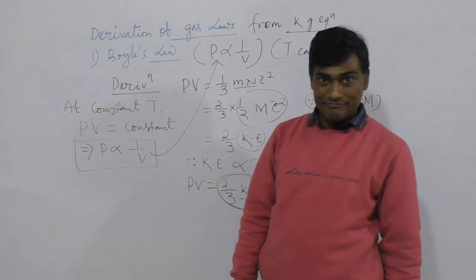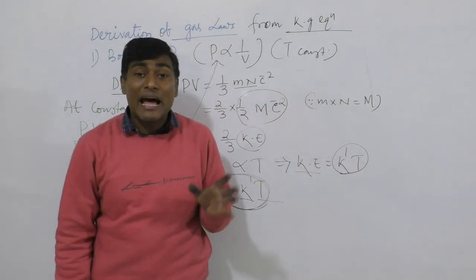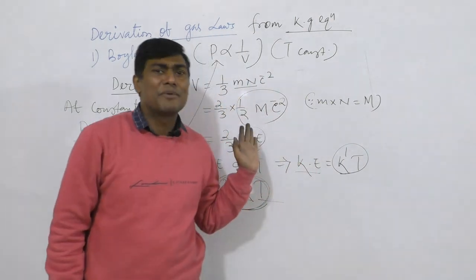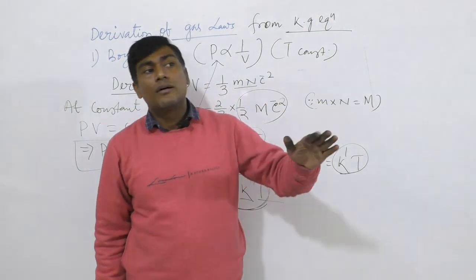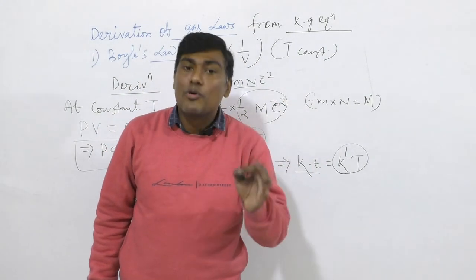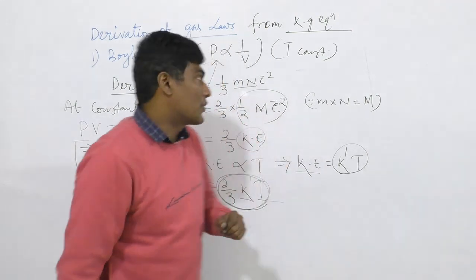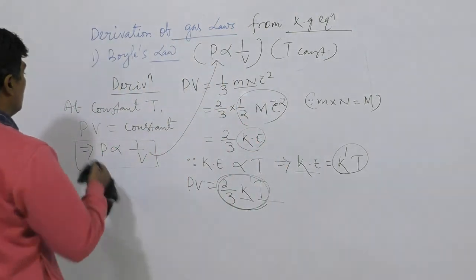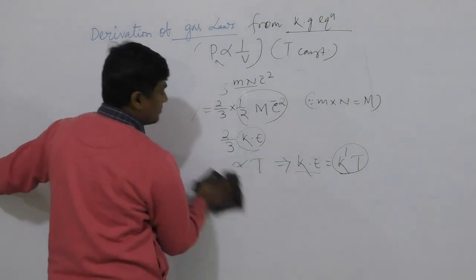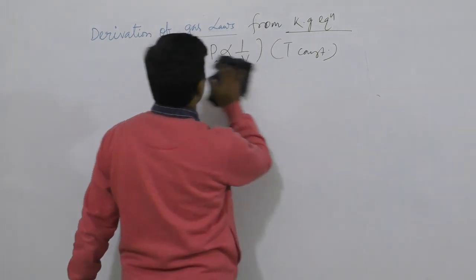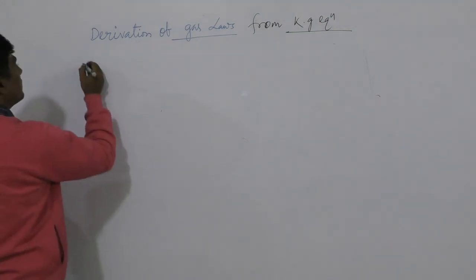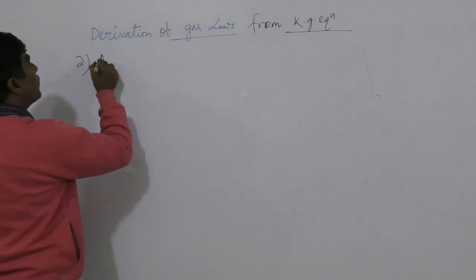So we have derived Boyle's law from the kinetic gas equation. Similarly, one can derive Charles's law in a similar fashion. We will now move to deriving Avogadro's law.